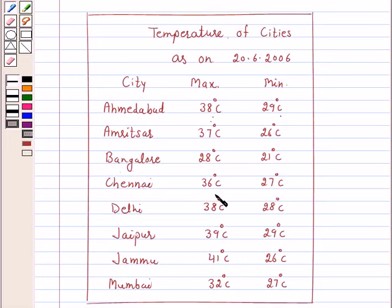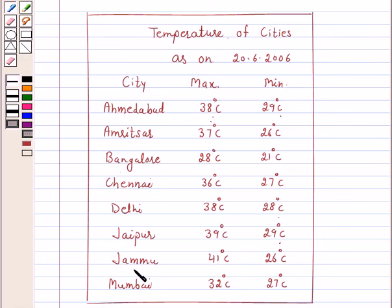Chennai: 36 degrees centigrade and 27 degrees centigrade. Delhi: 38 degrees centigrade and 28 degrees centigrade. Jaipur: 39 degrees centigrade and 29 degrees centigrade. Jammu: 41 degrees centigrade and 26 degrees centigrade. Mumbai: 32 degrees centigrade and 27 degrees centigrade.